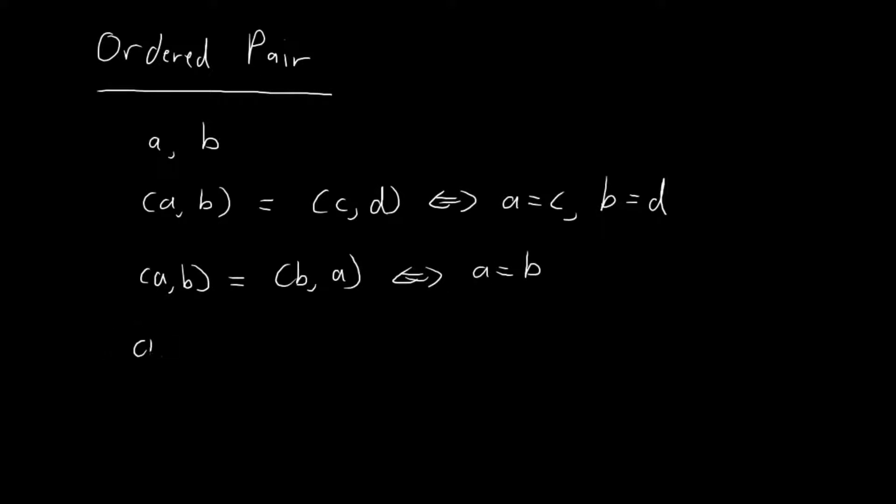For example, the ordered pair (1,2) is actually different from the ordered pair (2,1), because 1 is not equal to 2, and 2 is not equal to 1. And since it does not satisfy this definition of equality, these two ordered pairs are actually different.